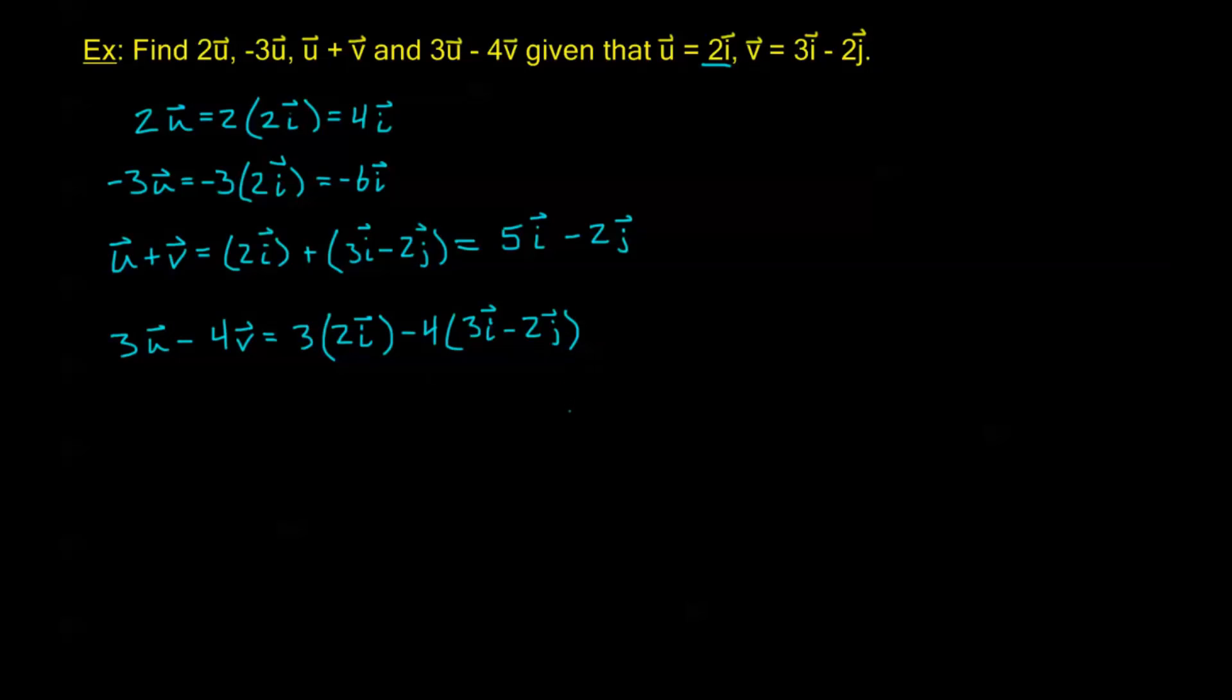With all those operations properties, we know that when we're doing all these operations on vectors, they have all the same properties as real numbers, or in this case we can think of them as having the same properties as a variable in an expression. So 3 times 2I is 6I.